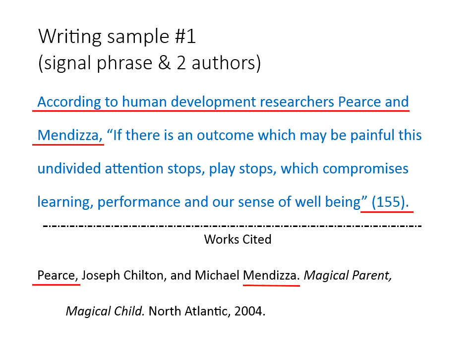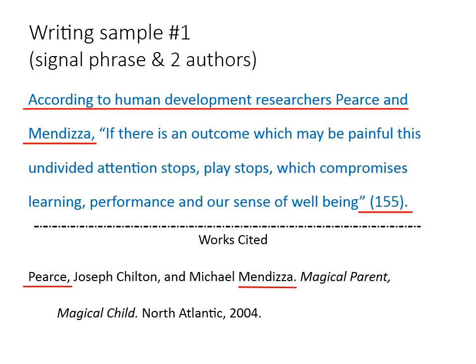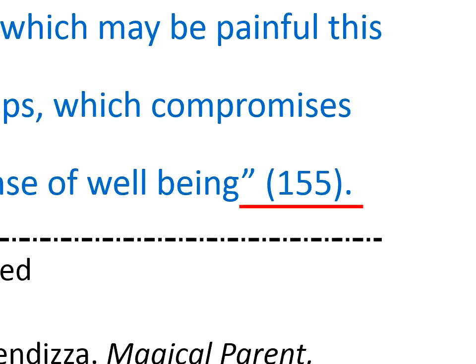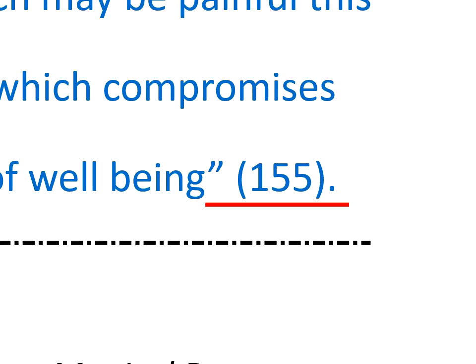Pay attention to the punctuation here, too. Right after the quotation mark and a space, you type a beginning parentheses, then the page number where you found the quote, the closing parentheses, then a period. Notice that you don't include the author's names in the parentheses, because they are already in the sentence containing the quote. Author names go either in the signal phrase or in the parentheses, not in both places.